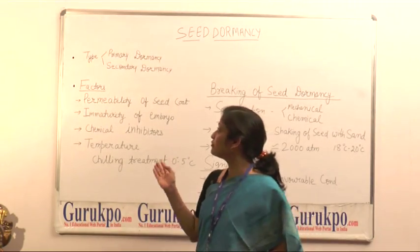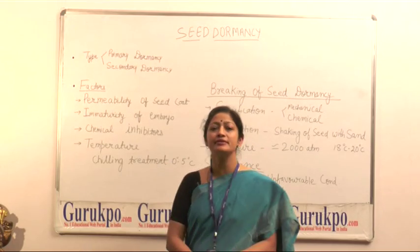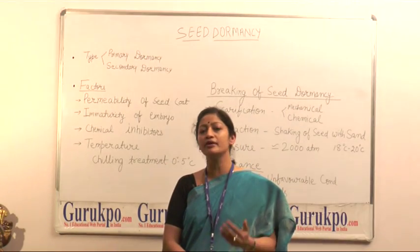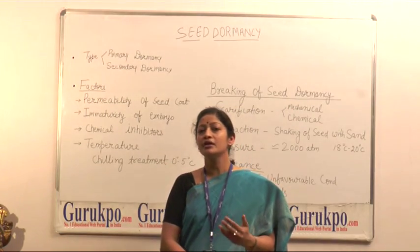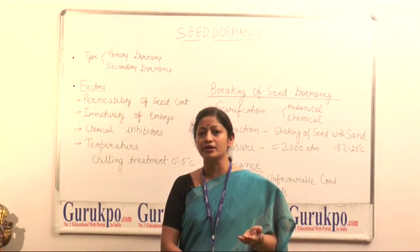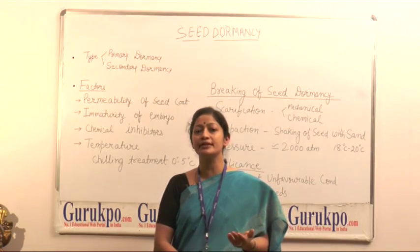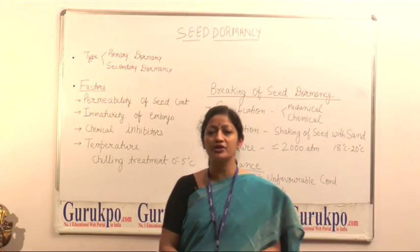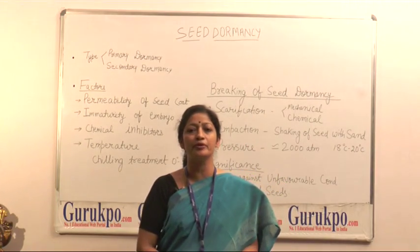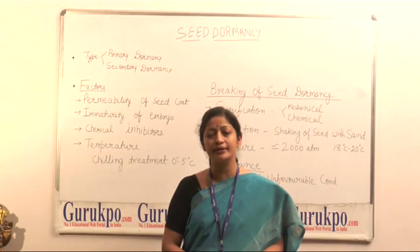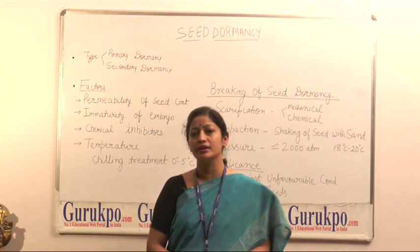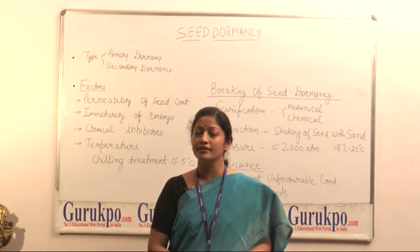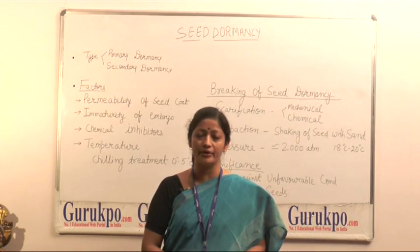First is called primary dormancy and second is secondary dormancy. Primary dormancy means the dormancy due to internal factors which are present inside the seeds, just like the immaturation of embryo or the presence of inhibitors inside the seeds. This may cause dormancy in seeds. This is called primary dormancy.